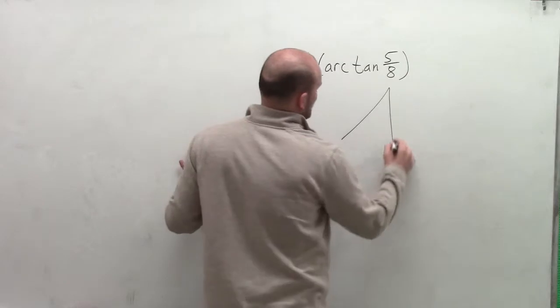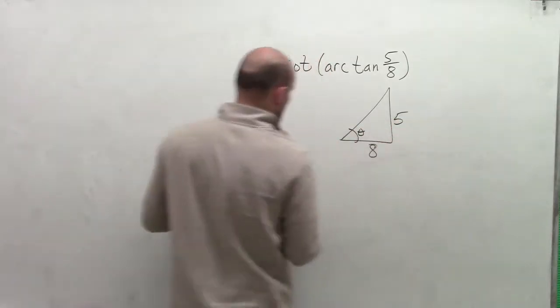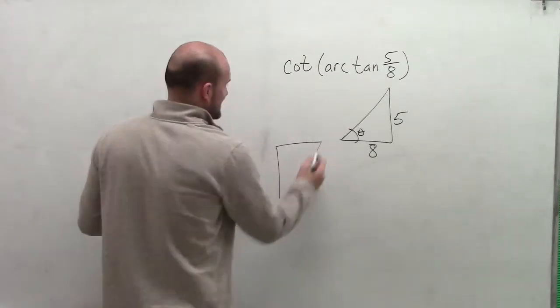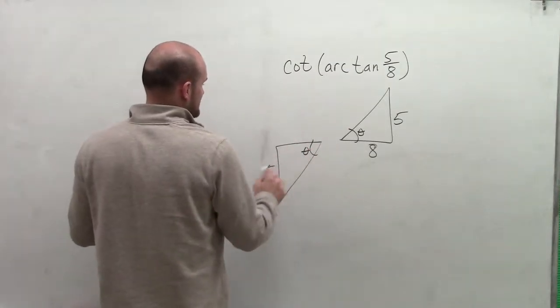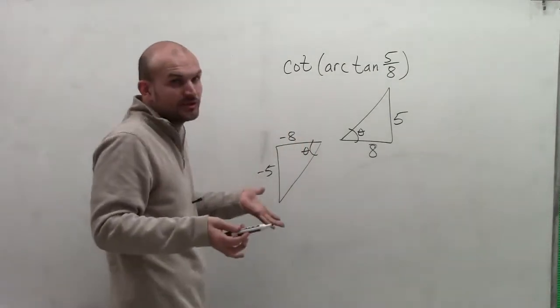We have a couple of triangles we could create. We have a triangle here where I could say here's theta, and here's my 5/8. Or I could say here's theta, and here's my opposite over my adjacent, which negative 5 over negative 8 is still going to produce 5/8.